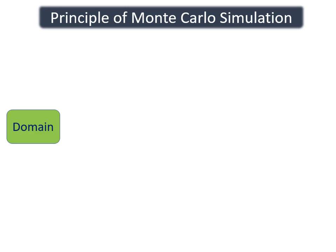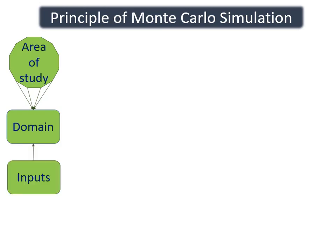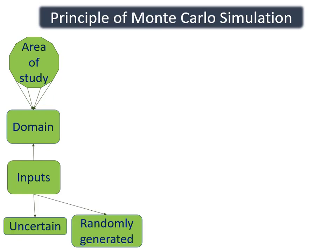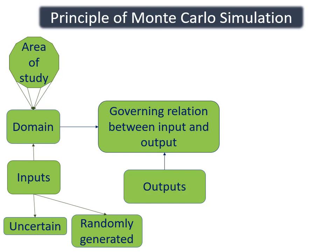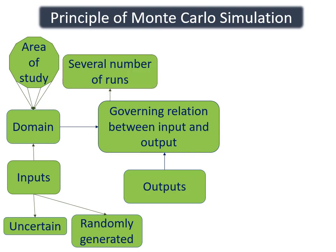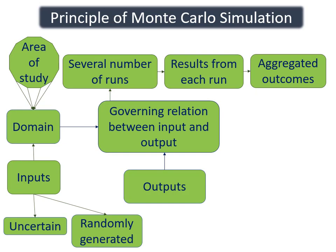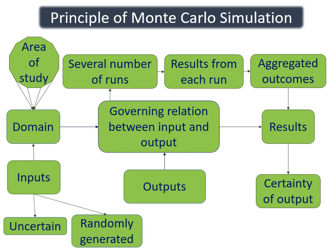At first, a domain is selected where the study is to be focused. Various inputs are defined in the particular domain. Those inputs must be uncertain and randomly generated. Outputs must also be defined, which are selected on the basis of the nature and depth of study. Finally, these inputs and outputs defined under certain domains are related by some governing analytical model. Inputs are used by this model to obtain the preferred outputs. For this purpose, several iterations are done and results from each run are stored. All the results generated from each run are aggregated and a final result is obtained. This result is then used to determine the nature and behavior of outputs, which helps to study its certainty and distribution.